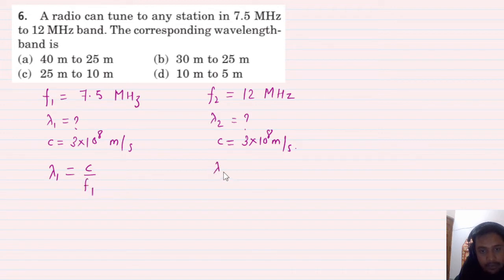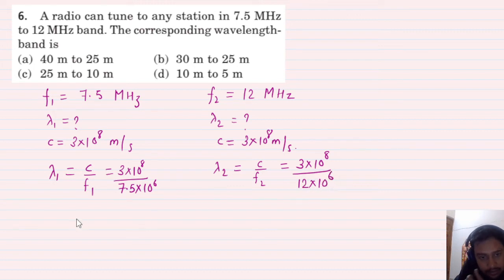Lambda 1 equals c by F1. Lambda 2 equals c by F2. The value of c is 3 into 10 to the power 8. F1 is 7.5 mega, which is 10 to the power 6. Similarly, 3 into 10 to the power 8 divided by F2, which is 12 mega, 10 to the power 6. Now solve this. Lambda 1, 7.5's decimal will be removed, so it becomes 30 upon 75 into, this cancels and this cancels, so we get 10 to the power 2.